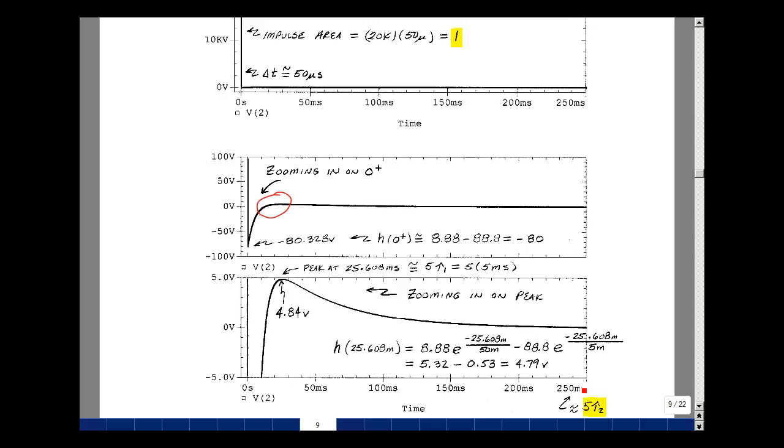We took the simulation out to 5 time constants of our lowest response, so you can see our results just reaching steady state. This is an example of network functions, the impulse response, and how to run it in PSPICE.